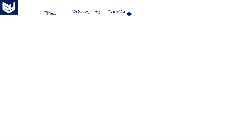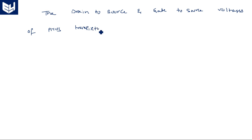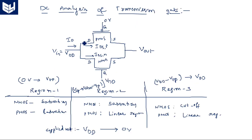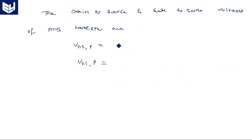Now coming to the VGS and VDS voltages for the PMOS transistor. VDS-P equals V-out minus VDD because, for PMOS, the drain and source terminals are in reverse order — the source is at V-out and drain is at VDD, so VDS-P = V-out minus VDD. For VGS-P, the gate potential is 0 volts and the source is connected to VDD, so VGS-P equals 0 minus VDD, which simplifies to negative VDD.